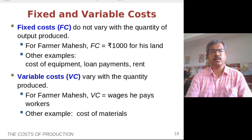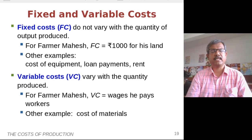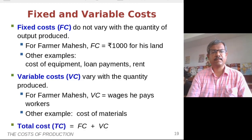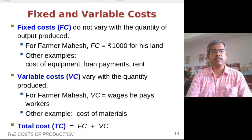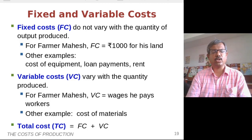Other examples of variable costs include cost of materials — typically more seeds, more fertilizers and manure, more insecticides, pesticides, and more water. All these are part of variable costs. The total cost is the sum of these two costs: fixed cost plus variable cost gives farmer Mahesh's total cost.